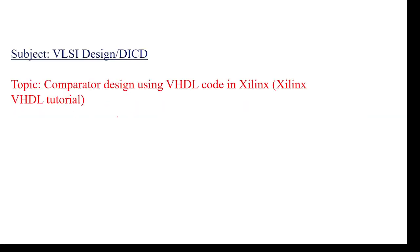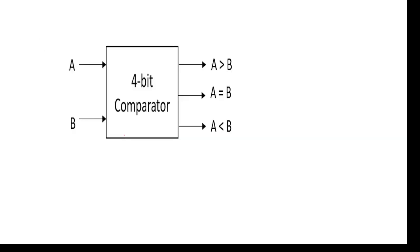I am going to explain about comparator designing using VHDL code. If you want to get my future videos, subscribe to my channel. Coming to the comparator, it will compare two given input binary signals. A and B are the input signals, and it will give the information either A greater than B, or A equal to B, or A less than B.